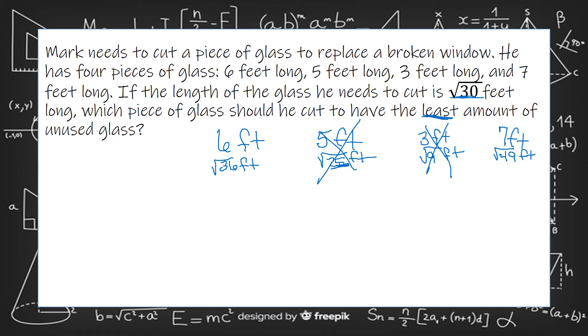So I can use either the 6 foot or the 7 foot. But if I want the least amount of unused glass, that means I'm going to choose the lower number here. And so that would be the 6 foot long piece of glass because square root of 30 is less than square root of 36.